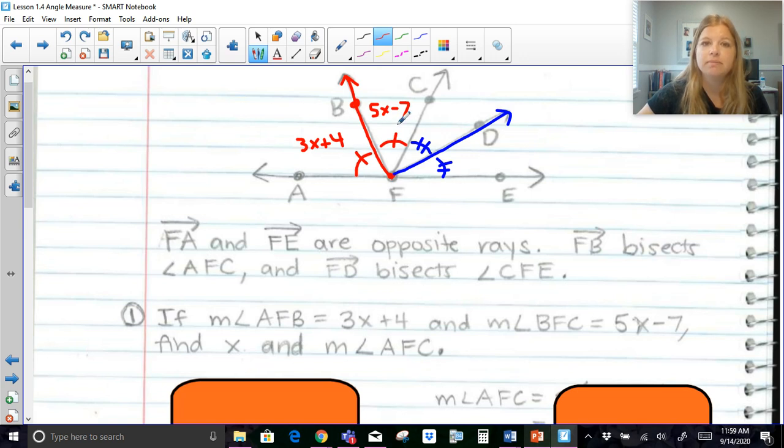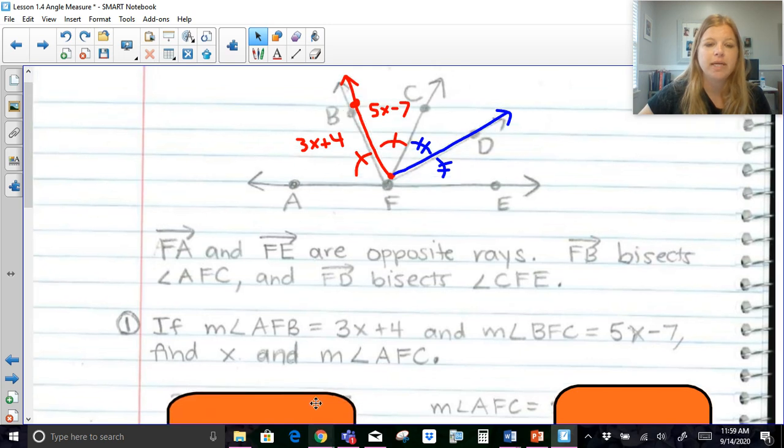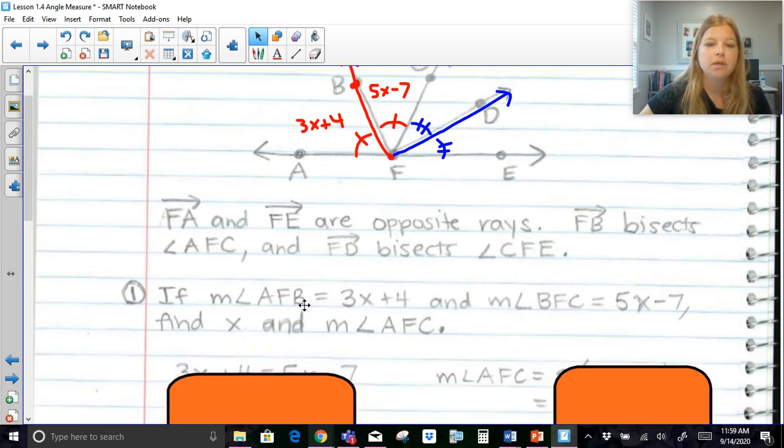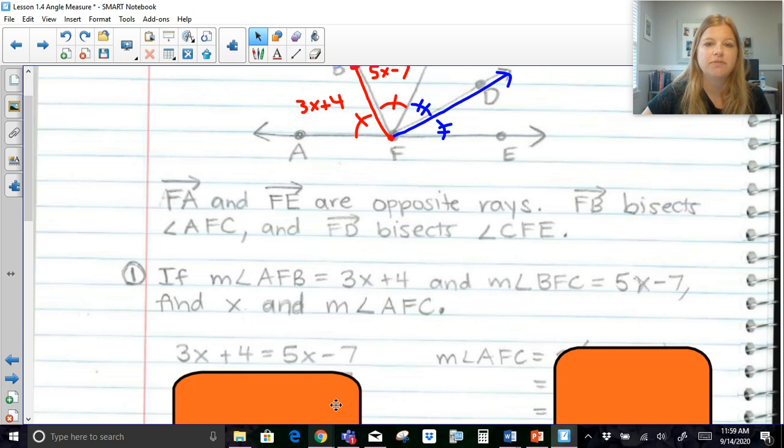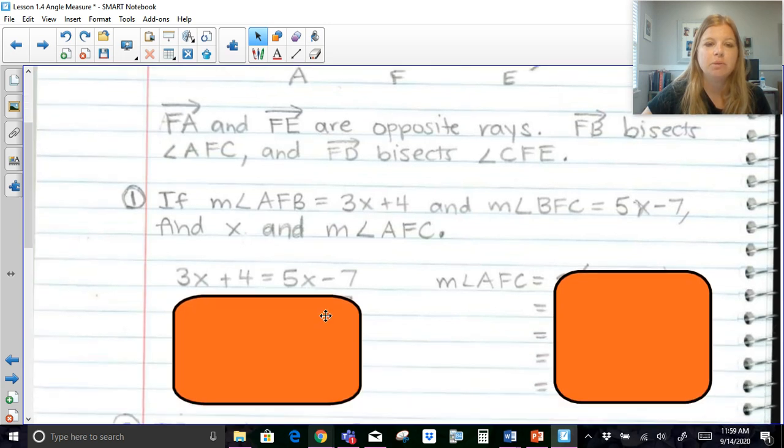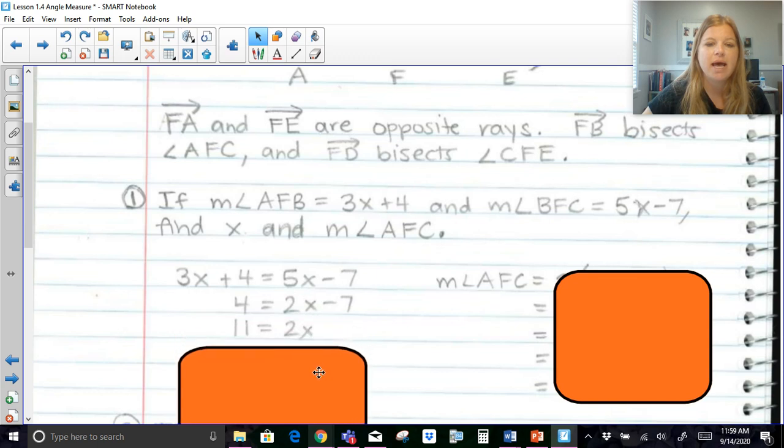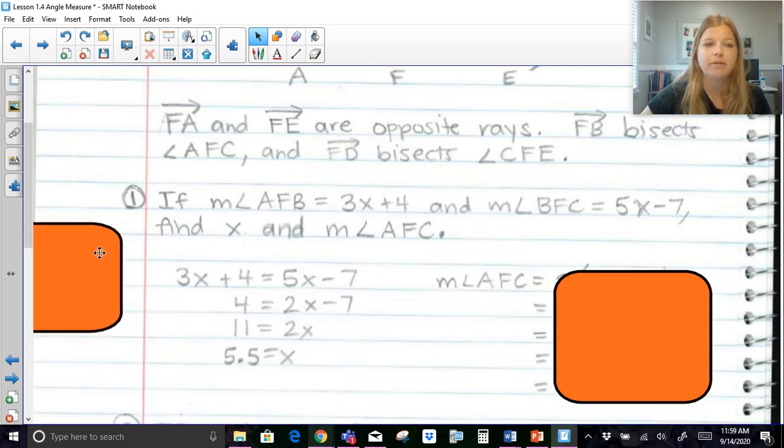If they are congruent to each other, these angles, then that means their measures are equal to each other. So that would mean that I would be able to set these two expressions equal to each other to solve for X. So 3X plus 4. So 3X plus 4 is equal to 5X minus 7. We would do our basic algebra, subtract 3X on both sides, add 7, and we end up getting that X is equal to 5.5. So that answers the first part.